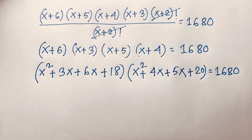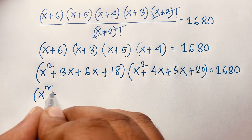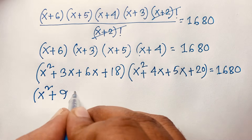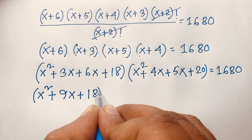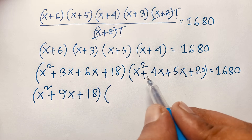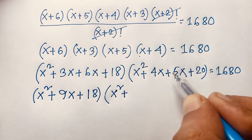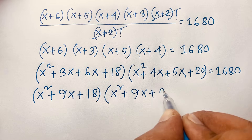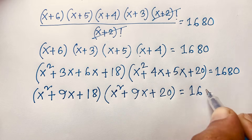Now at this moment I simplify each expression. The first gives x² + 3x + 6x + 18, which is x² + 9x + 18. And the second gives x² + 4x + 5x + 20, which is also x² + 9x + 20. Together, these equal 1680.